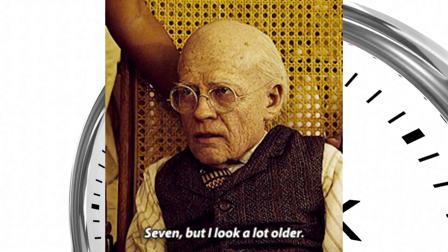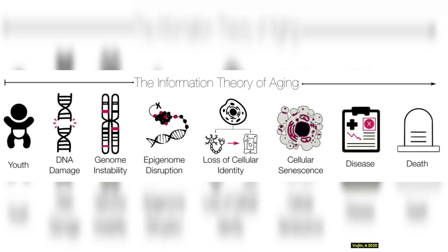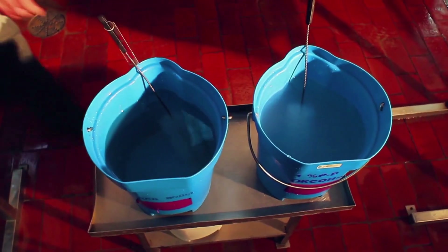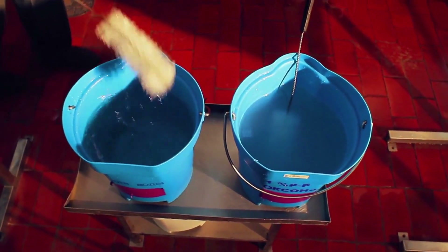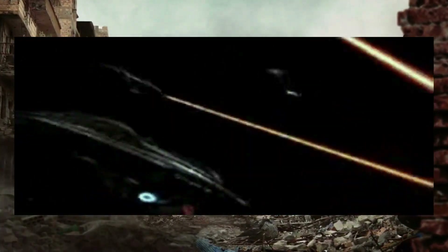The theory we're talking about is Sinclair's Information Theory of Aging, or ITA. Prior to the ITA, the predominant theories of aging fell into two main buckets. The first bucket includes damage accumulation theories, which suggest that our body's ability to repair damage slows as we age.